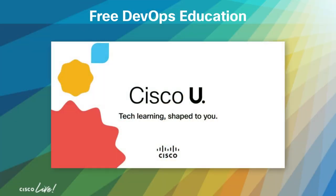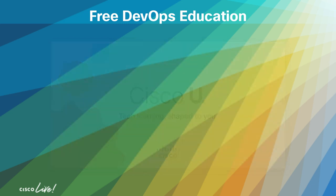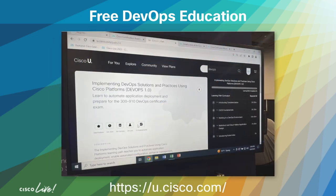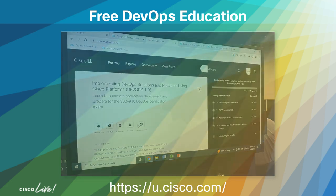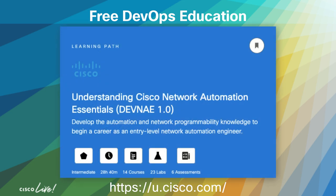Another interesting area at Cisco Live was hosted by Cisco U. The Implementing DevOps Solutions and Practices Using Cisco Platforms course was in their catalog. While that particular course is under the pay tier, there is a free tier where you can take the entire Understanding Cisco Network Automation Essentials learning path for free, which currently includes 14 courses, 23 labs, and six assessments.